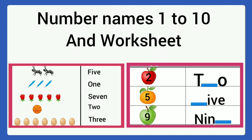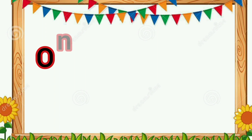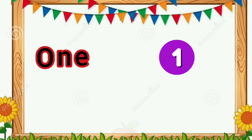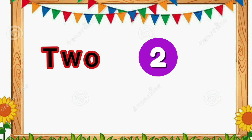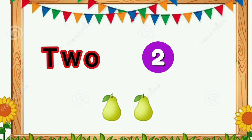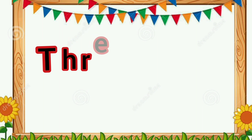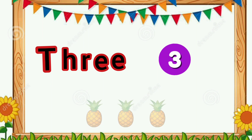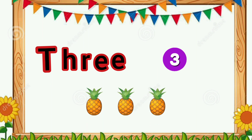Number Names 1 to 10. O-N-E, 1, 1 Apple. T-W-O, 2, 2 Pears. T-H-R-E-E, 3, 3 Pineapple.